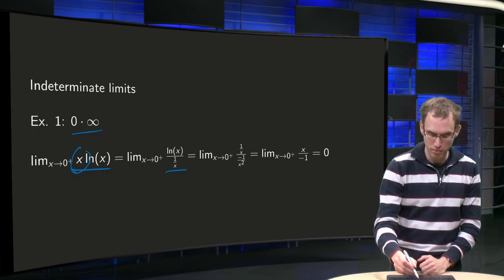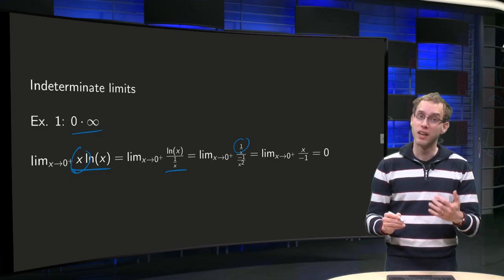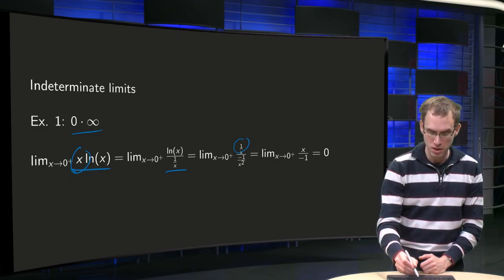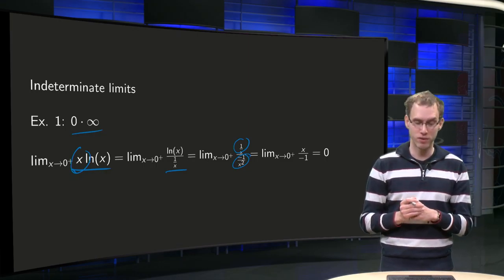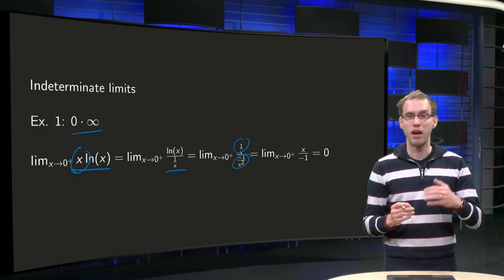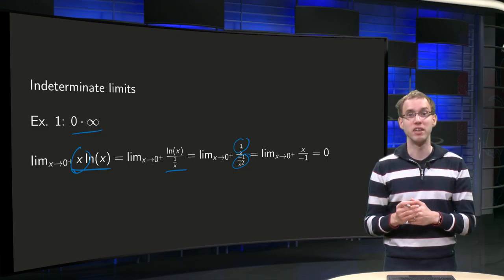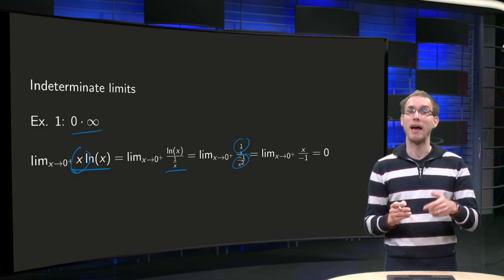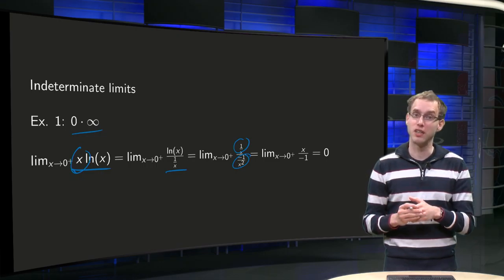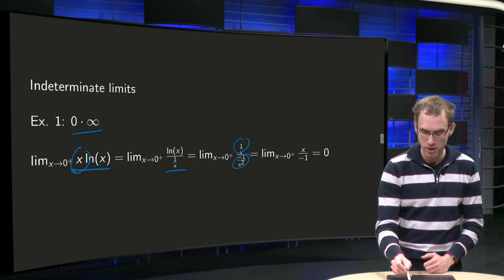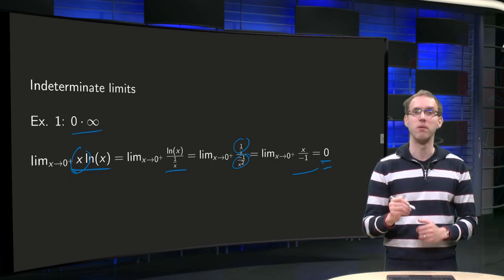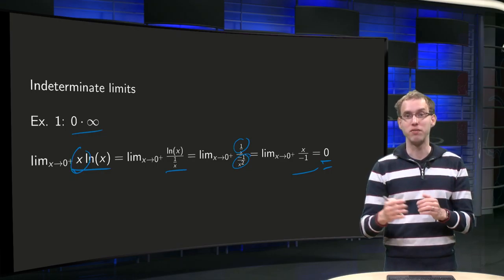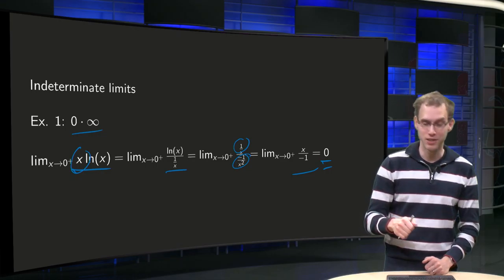So we apply L'Hôpital's Rule. The derivative of ln(x) equals 1/x, and the derivative of 1/x equals -1/x². So we have the limit of (1/x) divided by (-1/x²). Simplifying — multiply numerator and denominator by x² — we get x divided by -1, and as x goes to 0 that equals 0. So our 0 times infinity limit yields, in this particular case, 0.